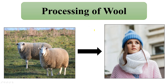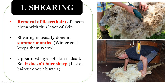We studied different sheep breeds and selective breeding. Now we will study how the hair or fleece on the skin of sheep is ultimately converted into sweaters. The first step in processing of wool is shearing. Shearing is the removal of hair or fleece of sheep along with a thin layer of skin. Shearing is usually done in summer months because in winter the sheep need this coat of hair to protect them from the cold.